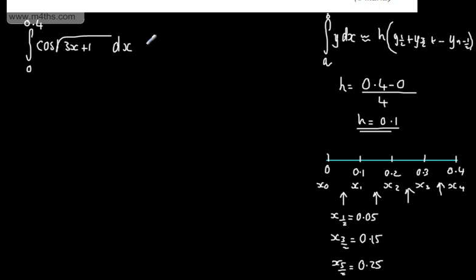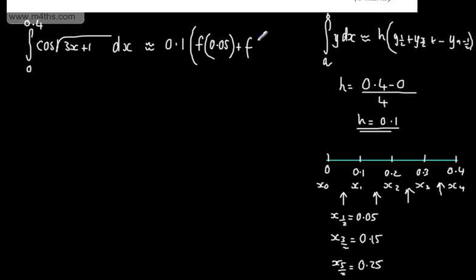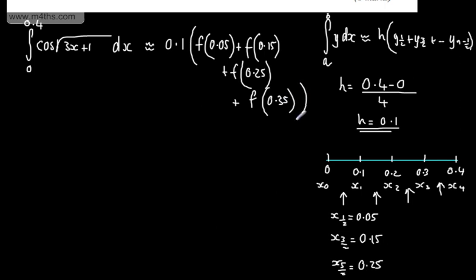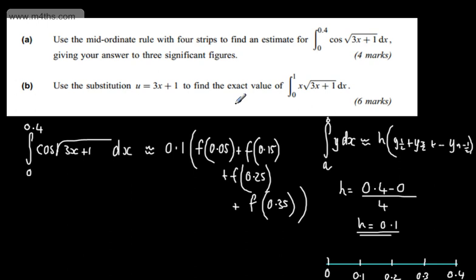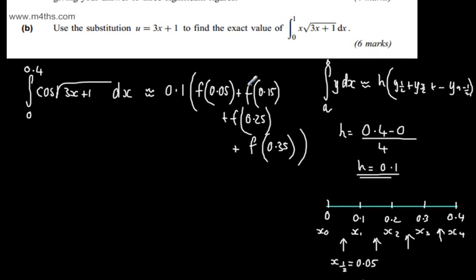So the approximation is: 0.1 × [f(0.05) + f(0.15) + f(0.25) + f(0.35)], where f(x) = cos(√(3x + 1)). Now we need to evaluate each of these through the calculator, working to 3 significant figures.